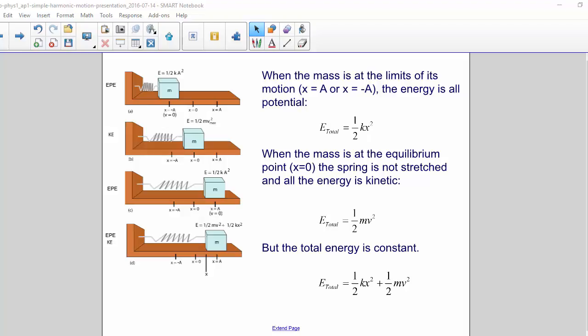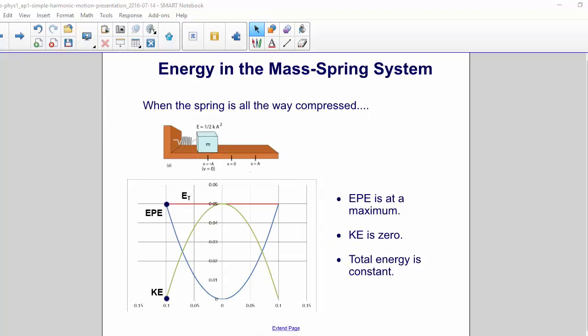But the total energy remains constant. When the spring is all the way compressed, elastic potential energy is at a maximum, kinetic energy is zero, and the total energy is constant. Here, the total energy is all elastic potential energy.